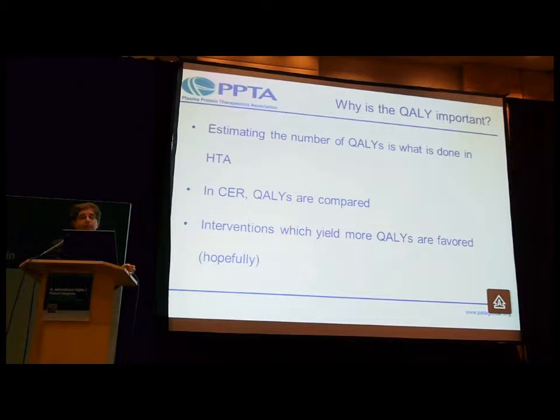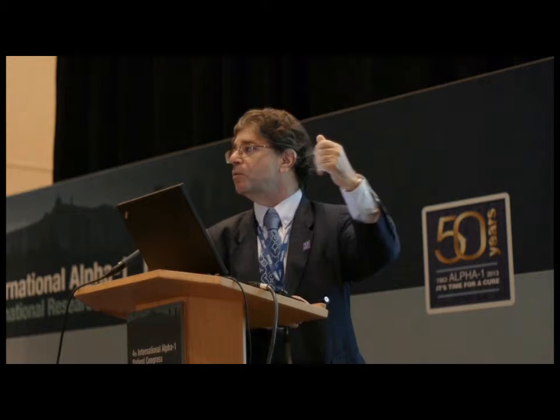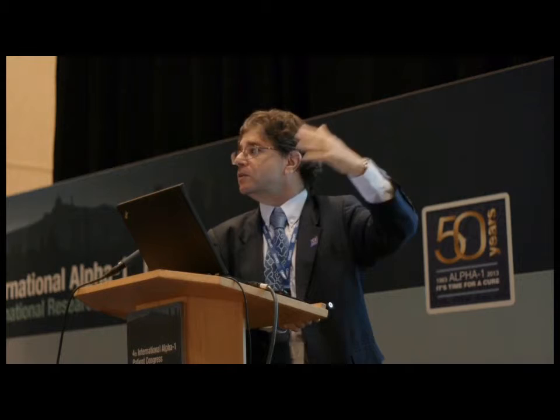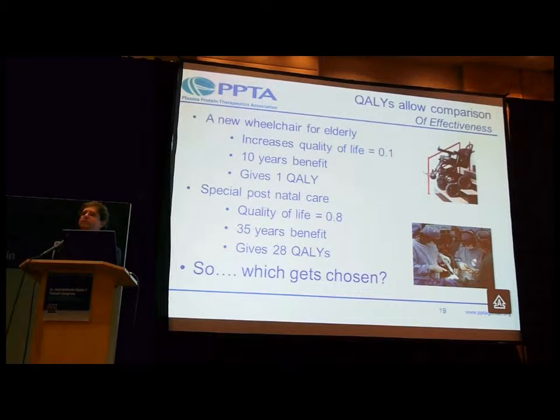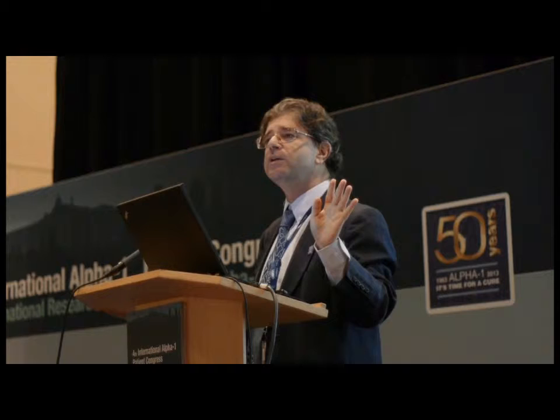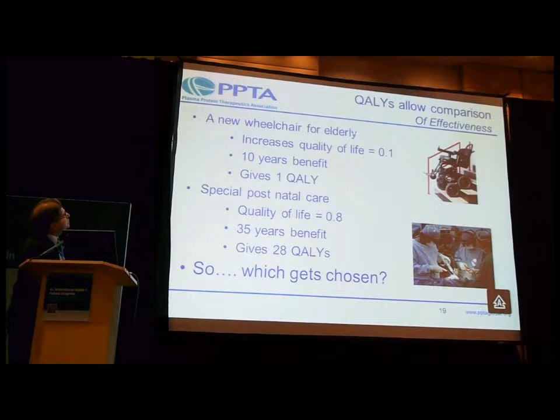Estimating the number of QALYs is always what is done. In the United States, in comparative effectiveness research, we simply compare the number of QALYs — in the previous example, we compared 20 to 35, and if there are 35 relative to 20 we say the treatment is favored. Now let's look at a simple example to show how authorities compare treatments. In cost-effectiveness analysis, we use the QALY because it is universally applicable — you can use it to compare any kind of healthcare intervention. We're going to compare a new wheelchair for elderly people to special postnatal care for premature babies.